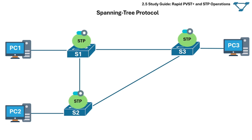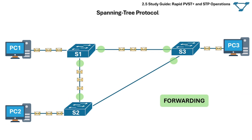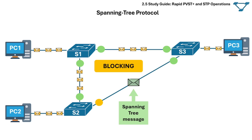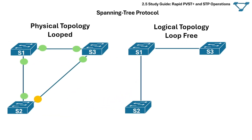When Spanning Tree is enabled on a switch, it controls the state of every switch port and places each one in either a forwarding or a blocking state. Ports in the forwarding state send and receive frames and act as normal switch interfaces — shown in green in our examples. Ports in the blocking state do not process any frames except for Spanning Tree messages and do not learn MAC addresses — shown in orange in the examples. Using this logic, Spanning Tree breaks the looped physical topology into a loop-free logical topology.